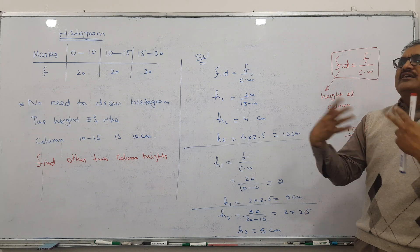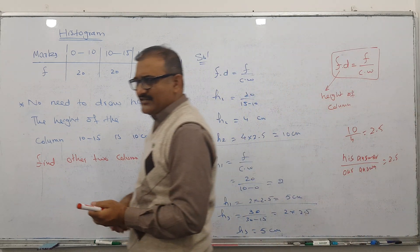So in this way we can find the unknown heights. He will give us one height and ask you for the rest of the heights - one, two, three, or four heights. This is enough for today.